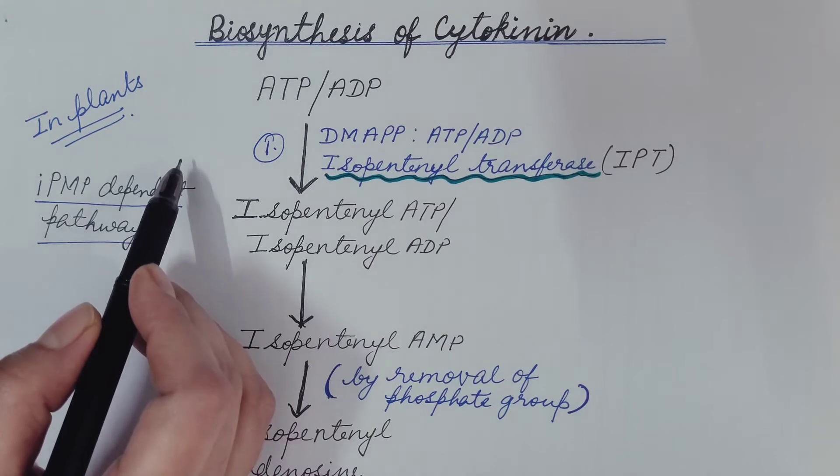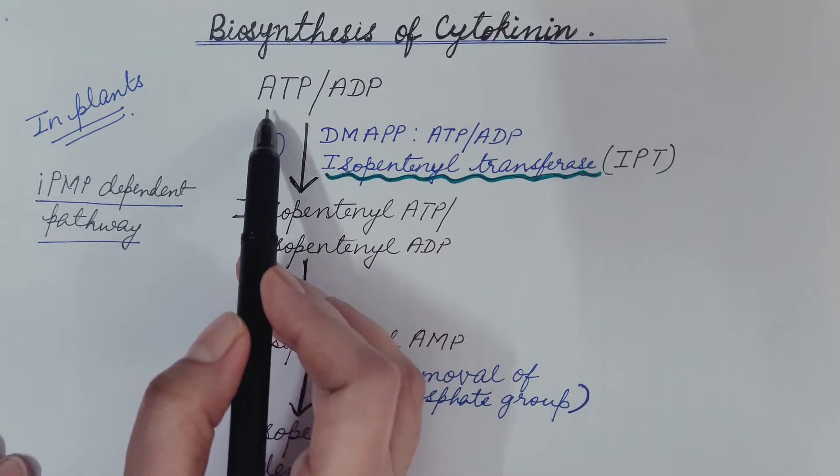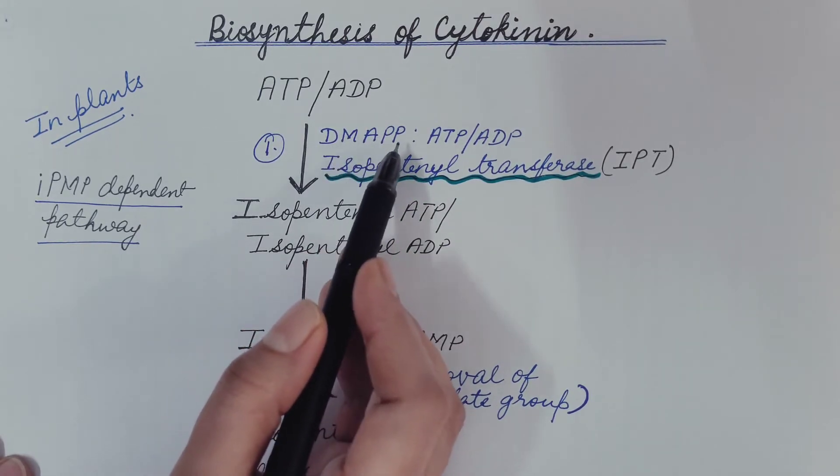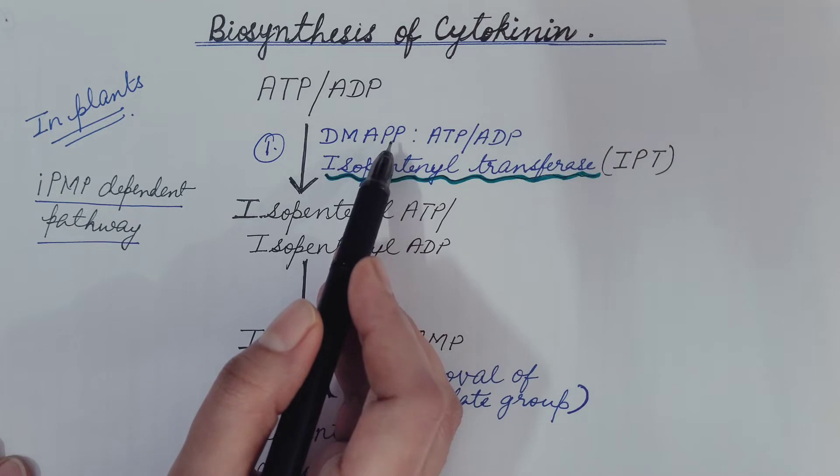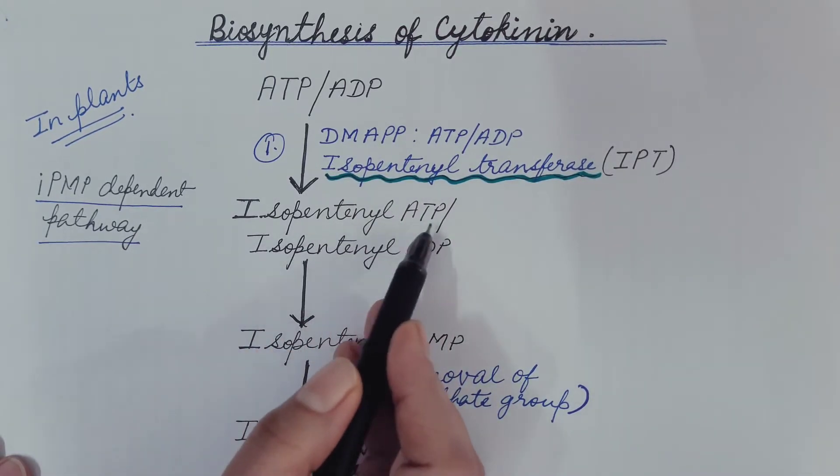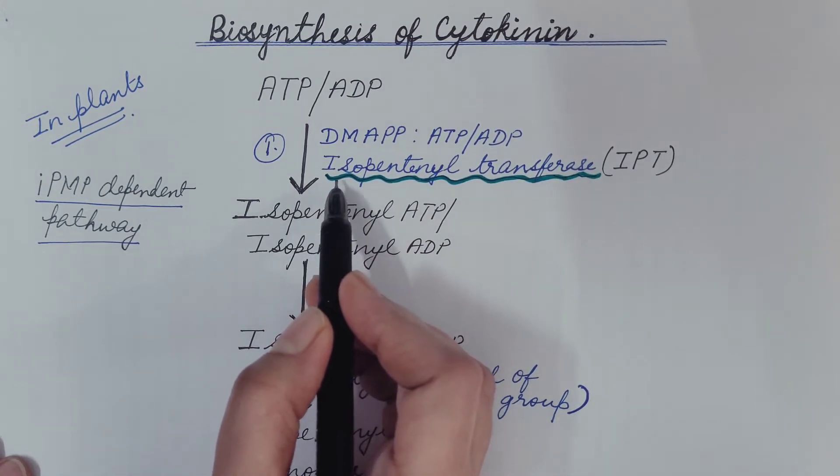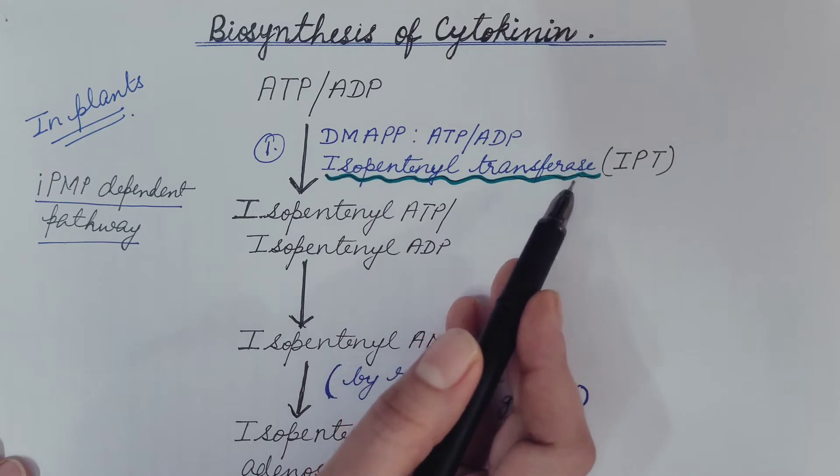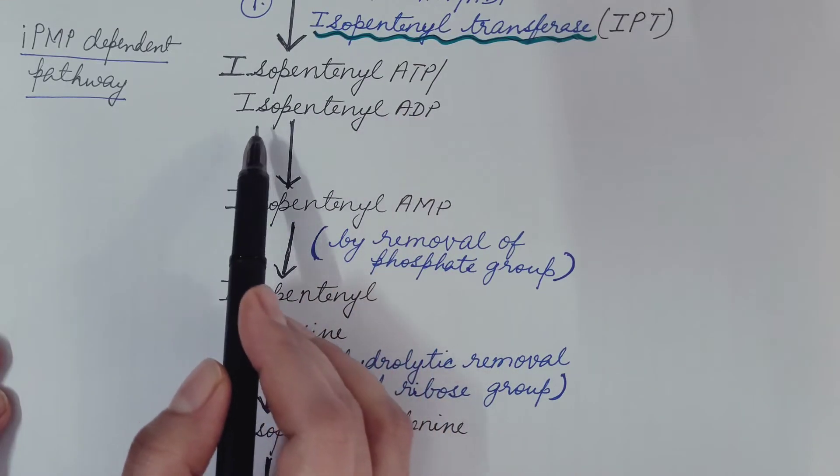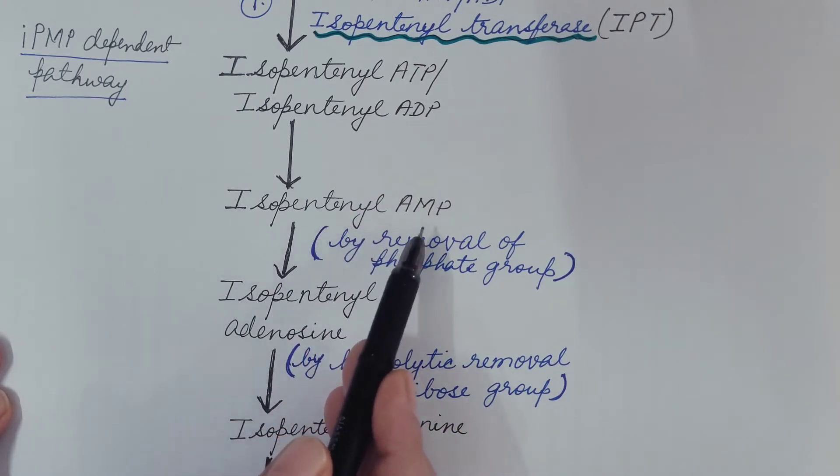Let us see this pathway step by step. First, ATP or ADP combines with DMAPP dimethylallyl pyrophosphate and gives isopentanyl ATP or isopentanyl ADP. This step is catalyzed by the enzyme isopentanyl transferase. Then this isopentanyl ATP or isopentanyl ADP is converted into isopentanyl AMP.